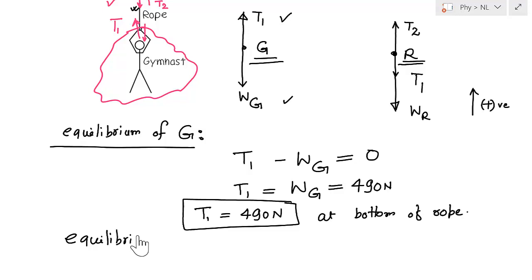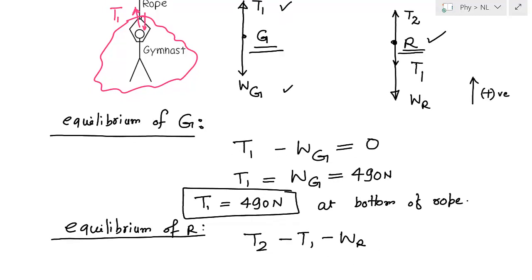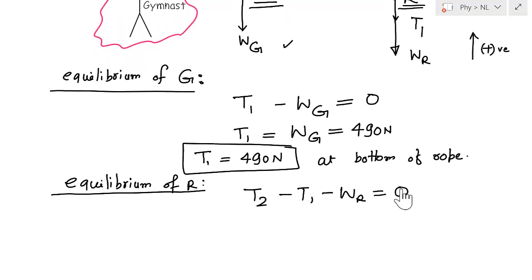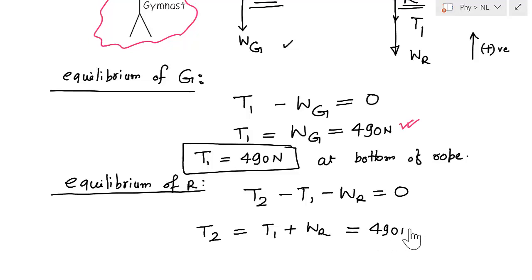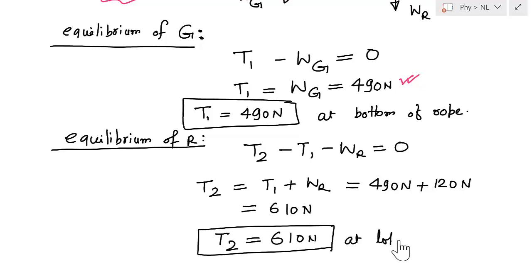Now consider the equilibrium of the rope. The upward force is T2, and the downward forces are T1 and WR. Setting the sum to zero: T2 minus T1 minus WR equals zero, so T2 equals T1 plus WR. Substituting T1 = 490 N and WR = 120 N gives T2 = 610 N. So the tension at the top of the rope is 610 N.